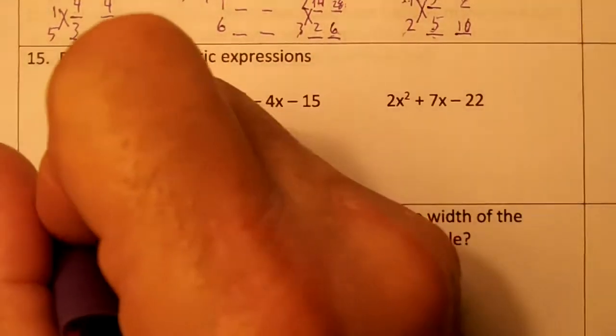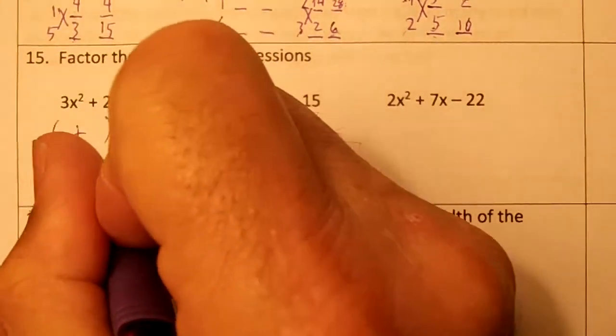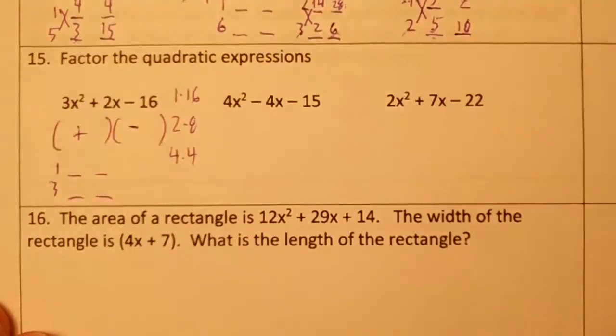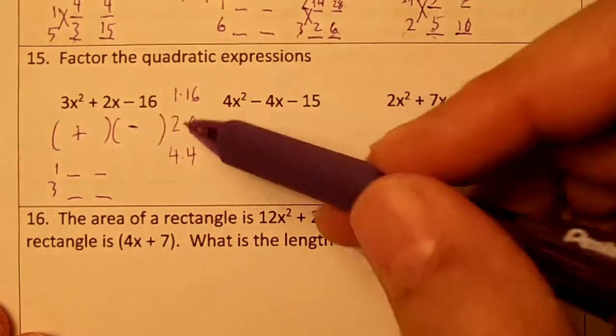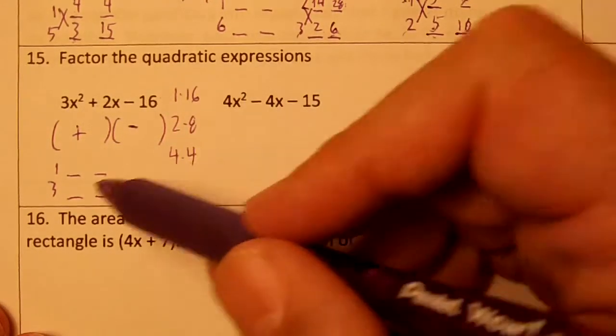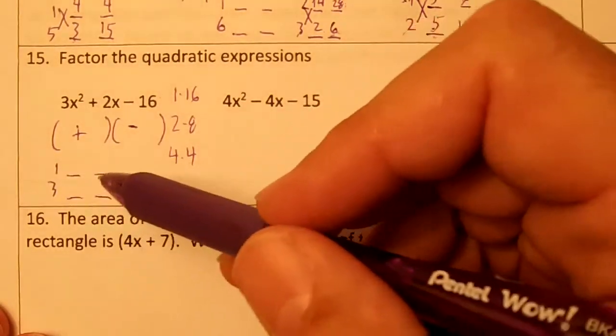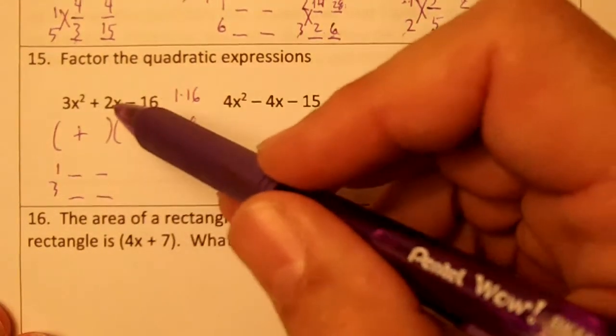Then we have 3x squared. The only factors of 3 are 1 and 3. You draw two blanks. On this problem, we won't add the products. We'll subtract and get 2. So which two of these numbers can we plug in here, multiply by 1 and 3, subtract the products, and get 2?